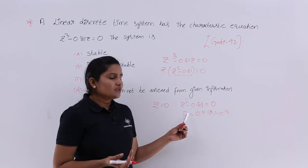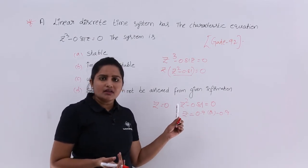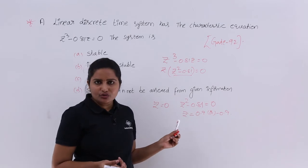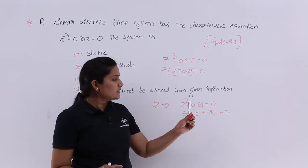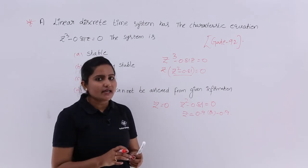Here the system is stable. Why? Because all the poles are inside the unit circle. Whenever they give a characteristic equation, then you need to mention the stability like that.